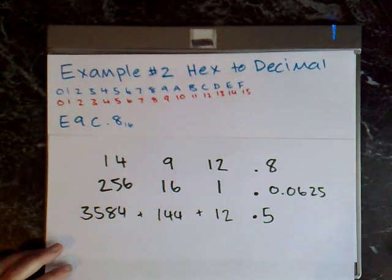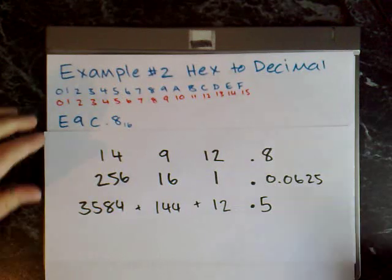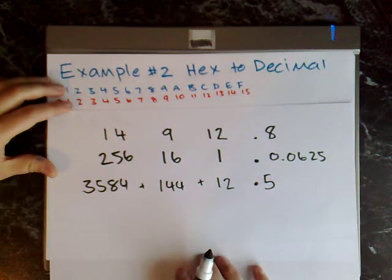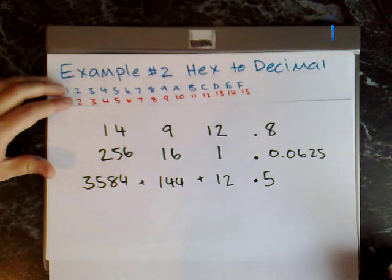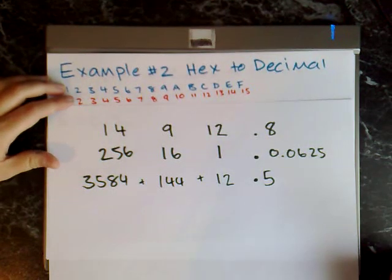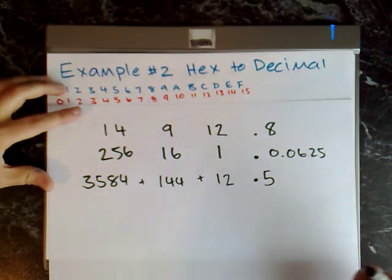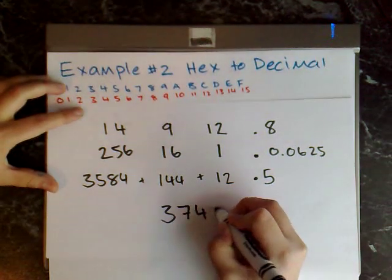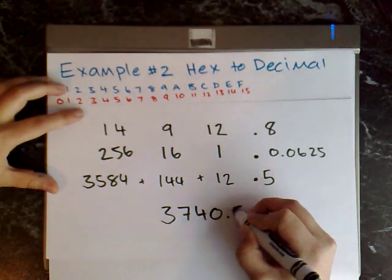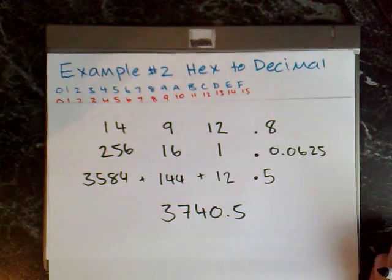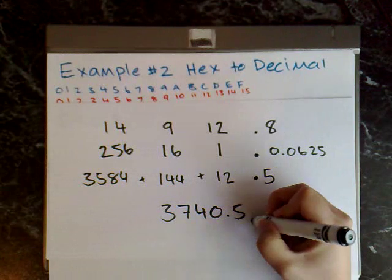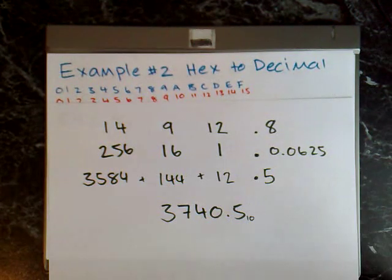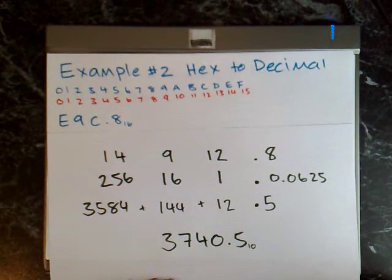So all I need to do now is add up this bottom row. So 3584 plus 144 plus 12 plus 0.05 gives me 3740.5 and then I just write a subscript 10 to show you that this is now in decimal form. And that's the final answer for that one.